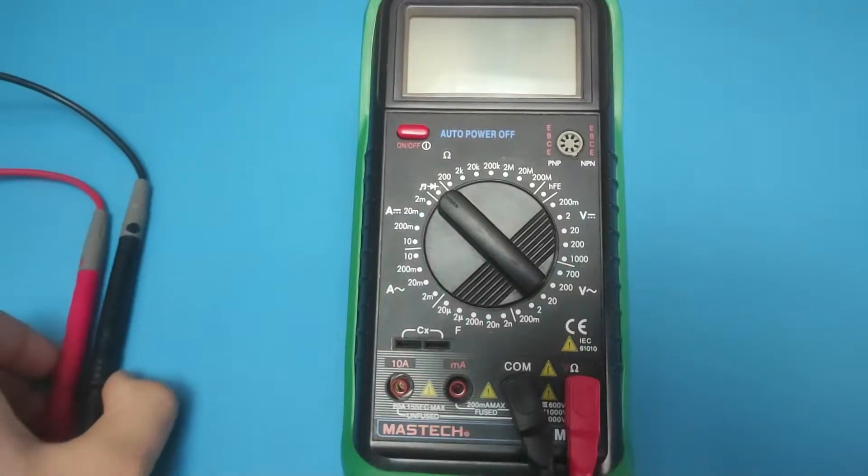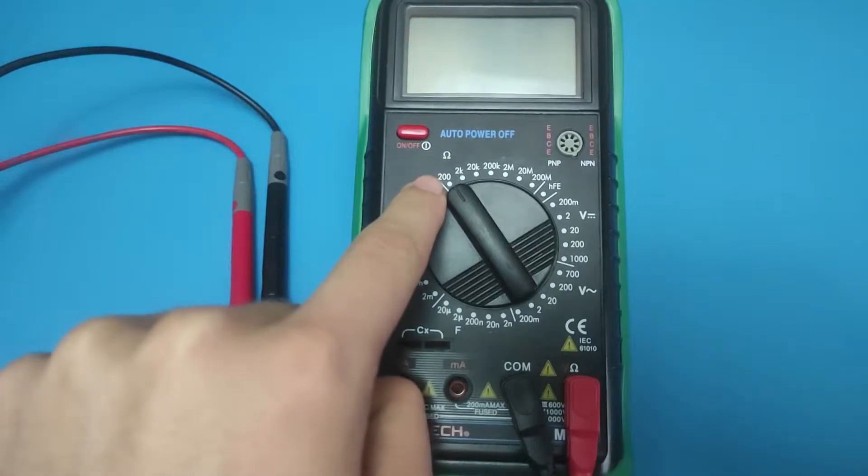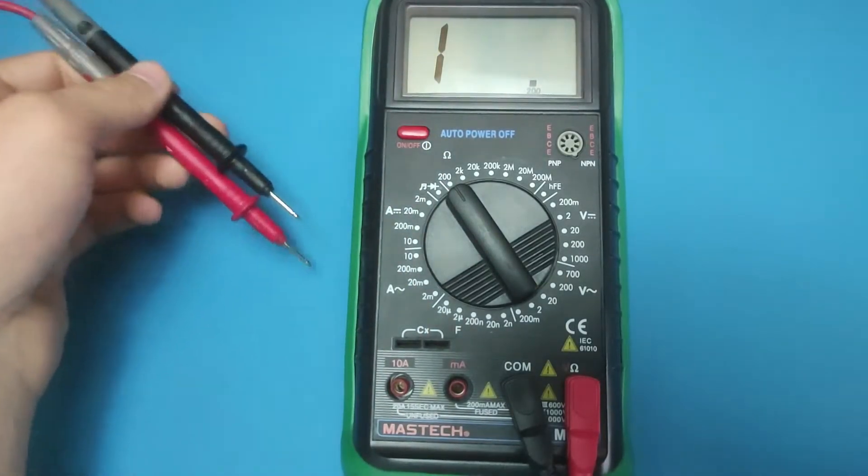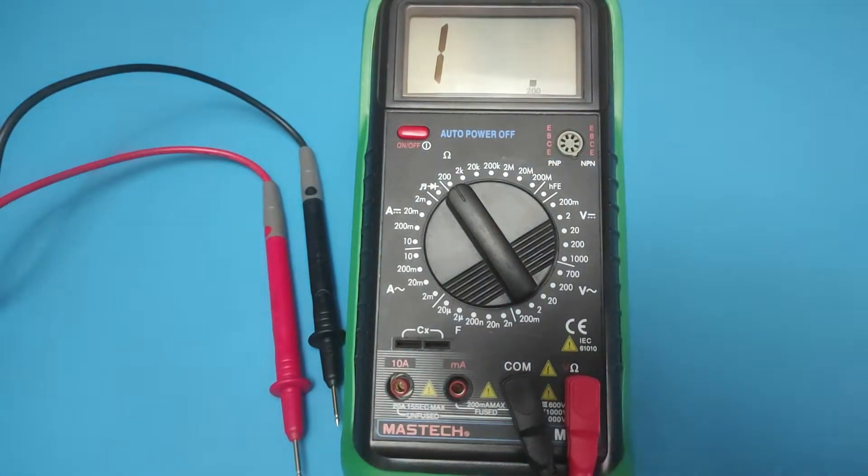Testing fuses for faults requires you to test their resistance. To measure resistance using the multimeter, you turn its dial to the ohms setting. The 200 ohm limit is the appropriate range you set the multimeter to, as this is the closest higher range that gives the most accurate result.